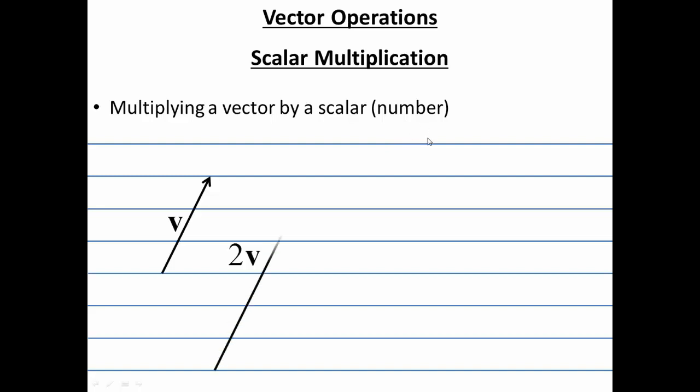So 2v just means that it's going to be twice as long. Negative 2v means it's twice as long, but it's also going in a negative direction. So I say it's not going to affect the direction unless, of course, it's going to affect the positive versus negative direction. 1 third v would just be a third as long.